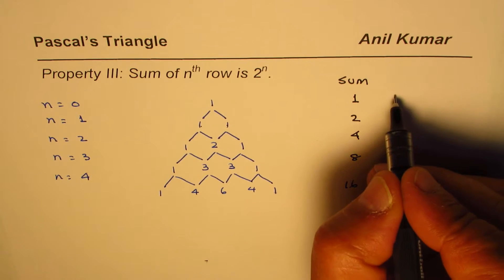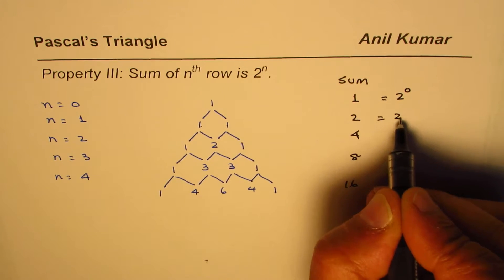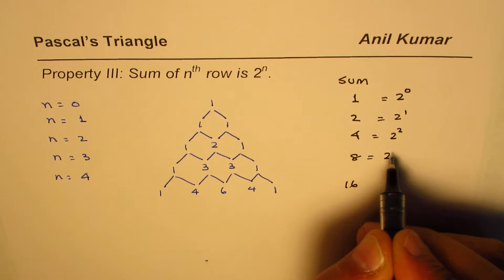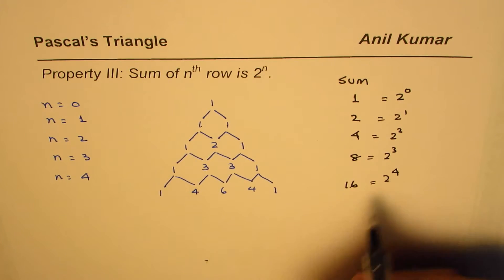Now you can see, what is 1 equals to? 1 is 2 to the power of 0, 2 is 2 to the power of 1, 4 is 2 to the power of 2, 8 is 2 to the power of 3, 16 is 2 to the power of 4.